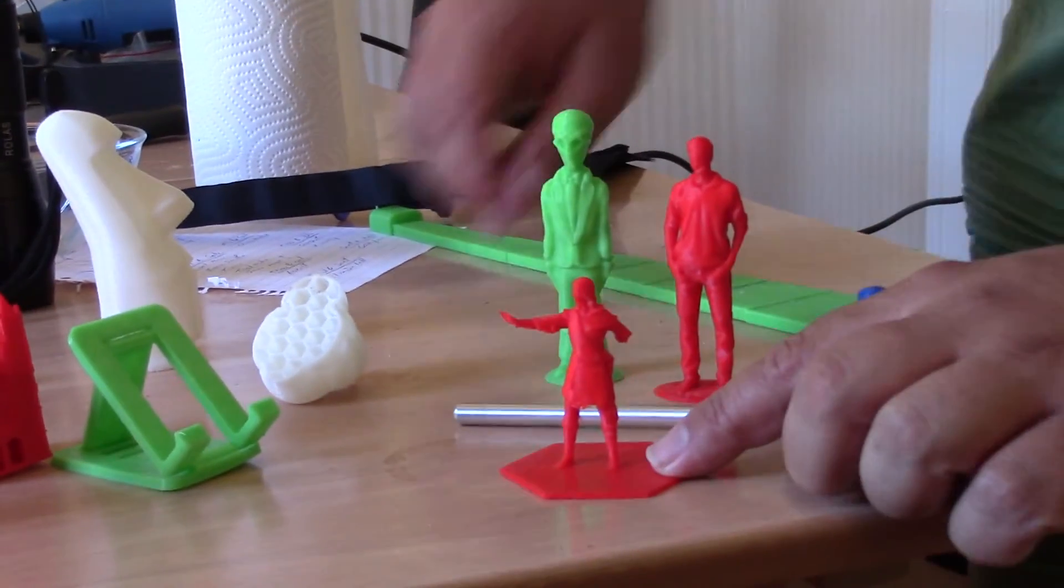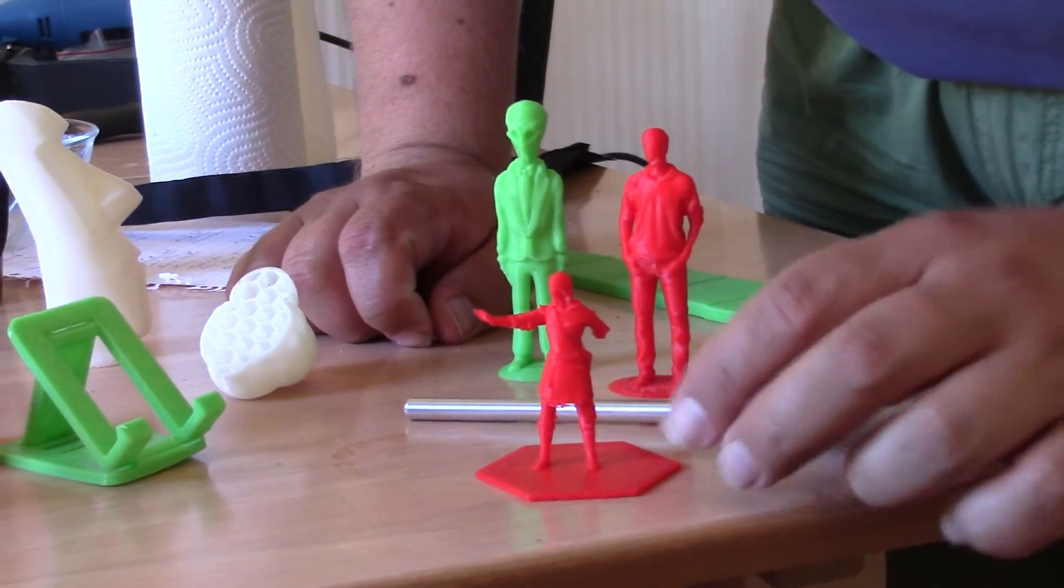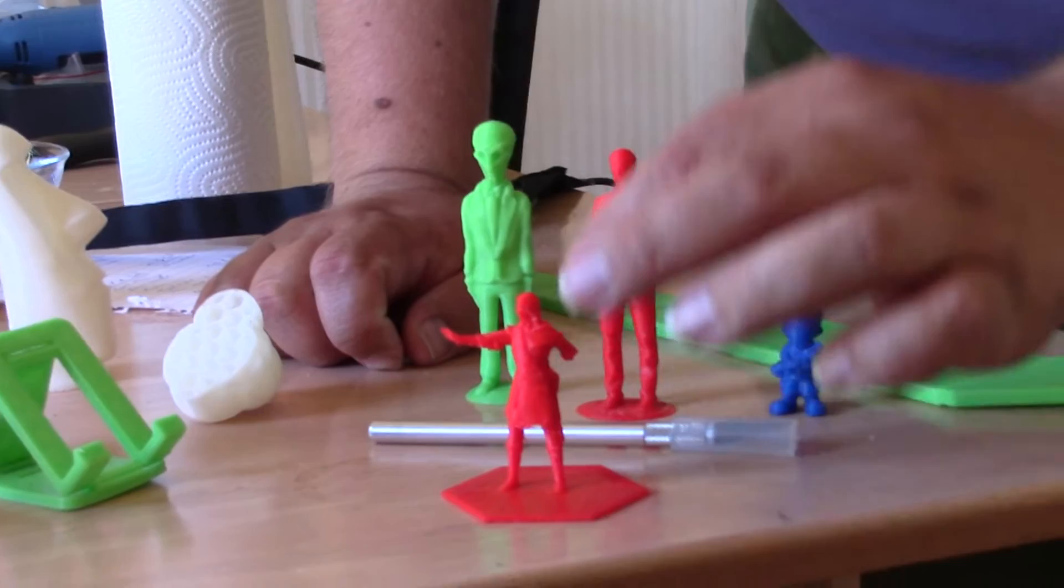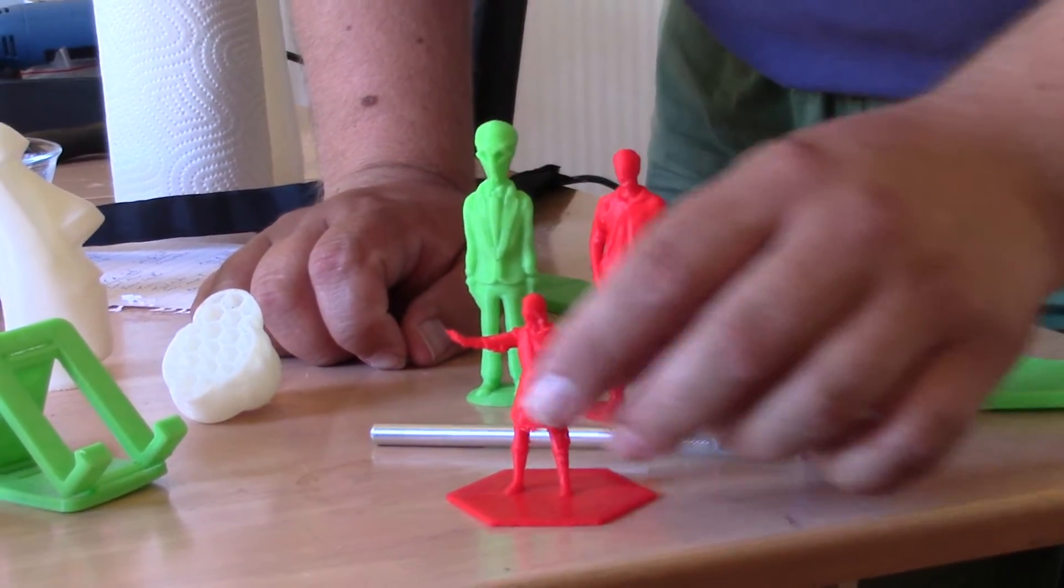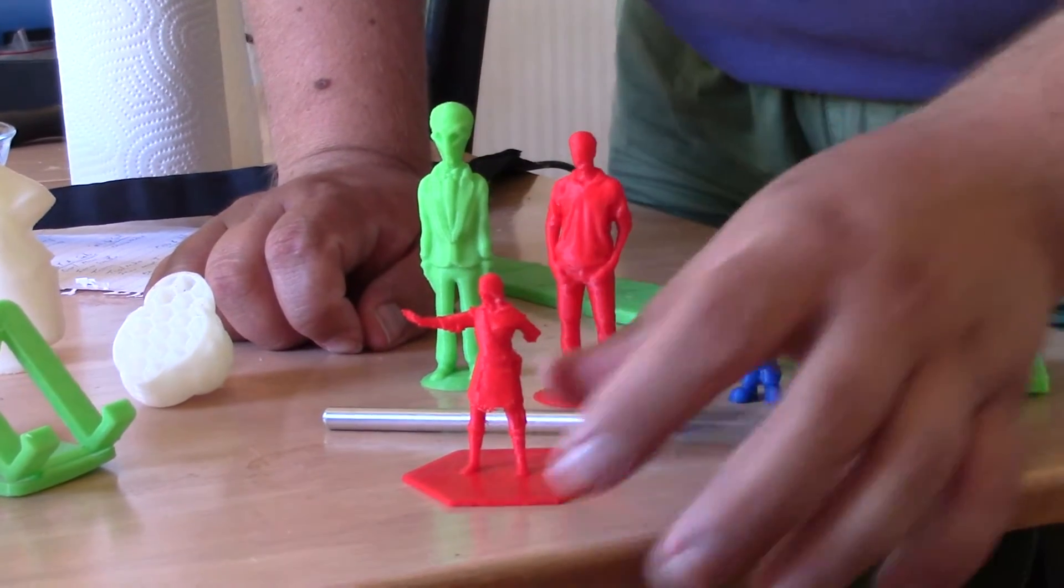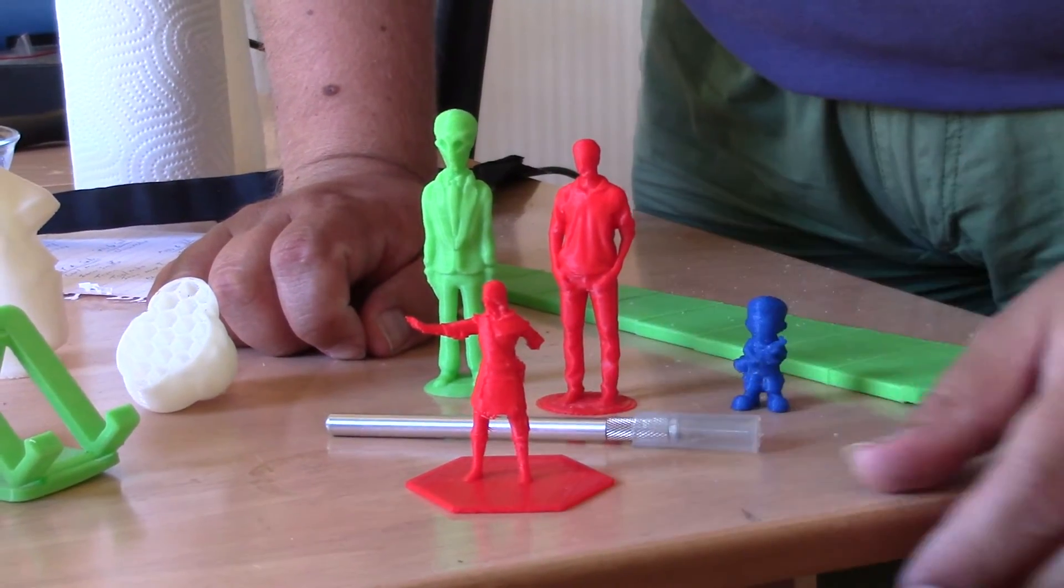We also printed this guy. This is supposed to be a shaman or something and he should have a staff over here, but it's printed without rafting, without support so it didn't really make it through. But it's still a really nice print for without any rafting.